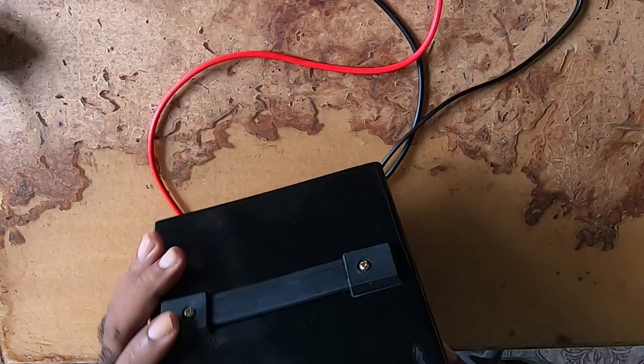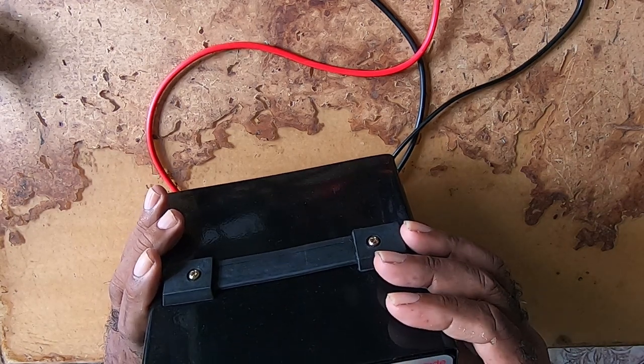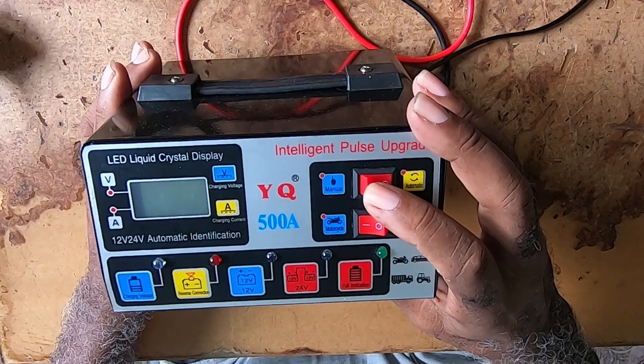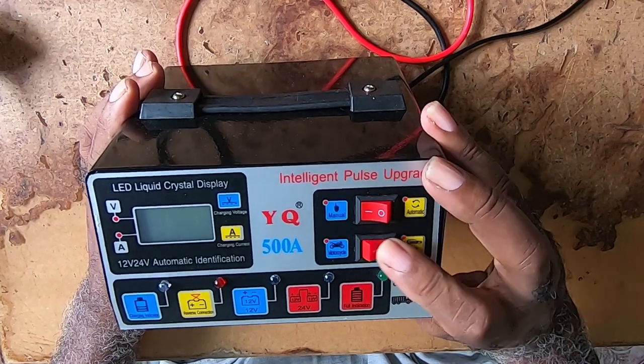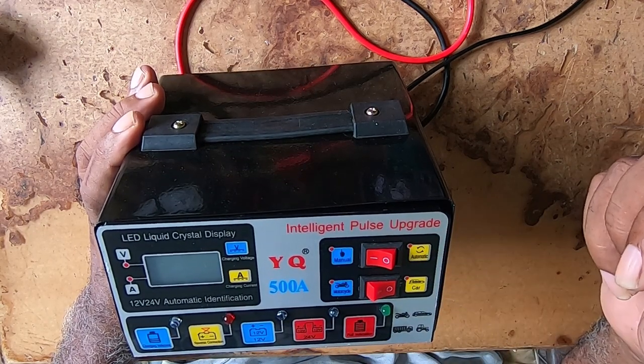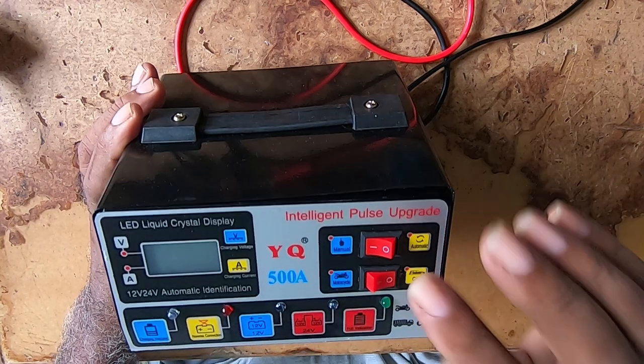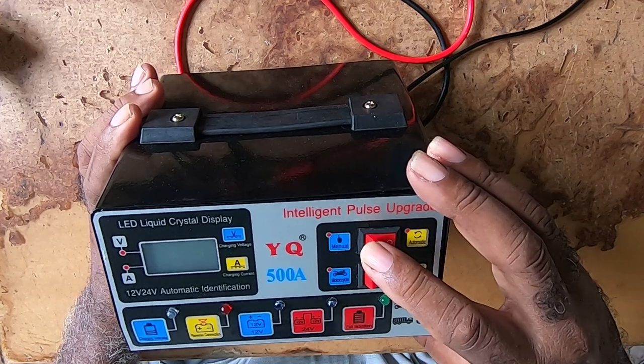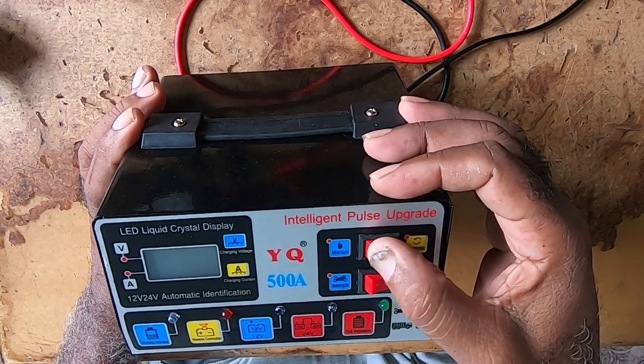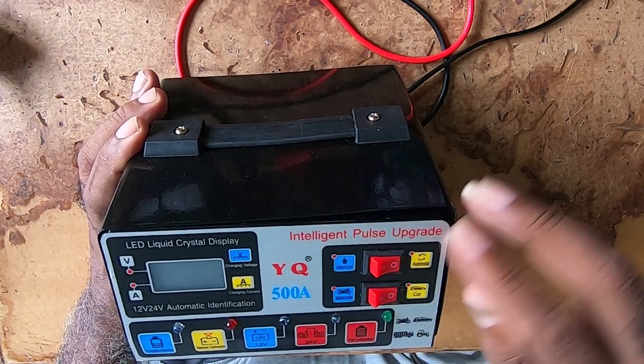It's true it has these lights. It has these switches which this side is manual, this side is automatic, this side is motorcycle, this side is car, but that's only a single pole switch. When it's here that mark means it's on, the zero means it's off.